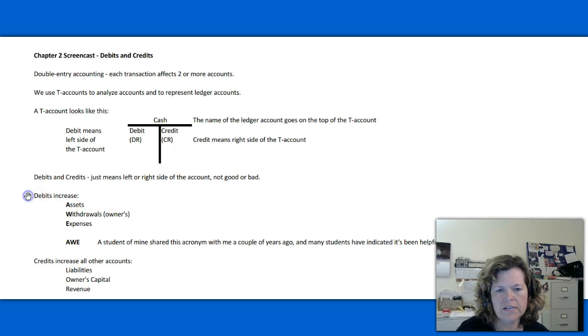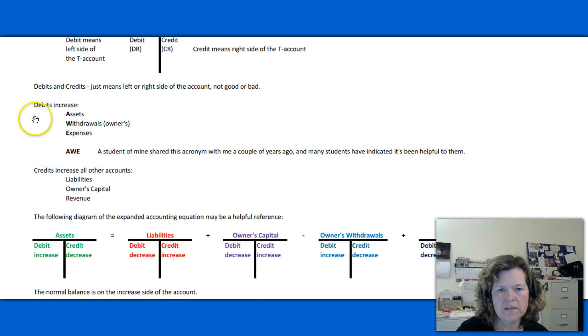So let's take a look down here how we use debits and credits and how they affect our accounts. Debits actually increase assets, withdrawals, and expenses. An acronym we can use that might be helpful to us is AWE. A student actually shared this with me a couple years ago. And many students have indicated it's been helpful for them to remember how to increase or what accounts do increase with debits. So assets, withdrawals, and expenses.